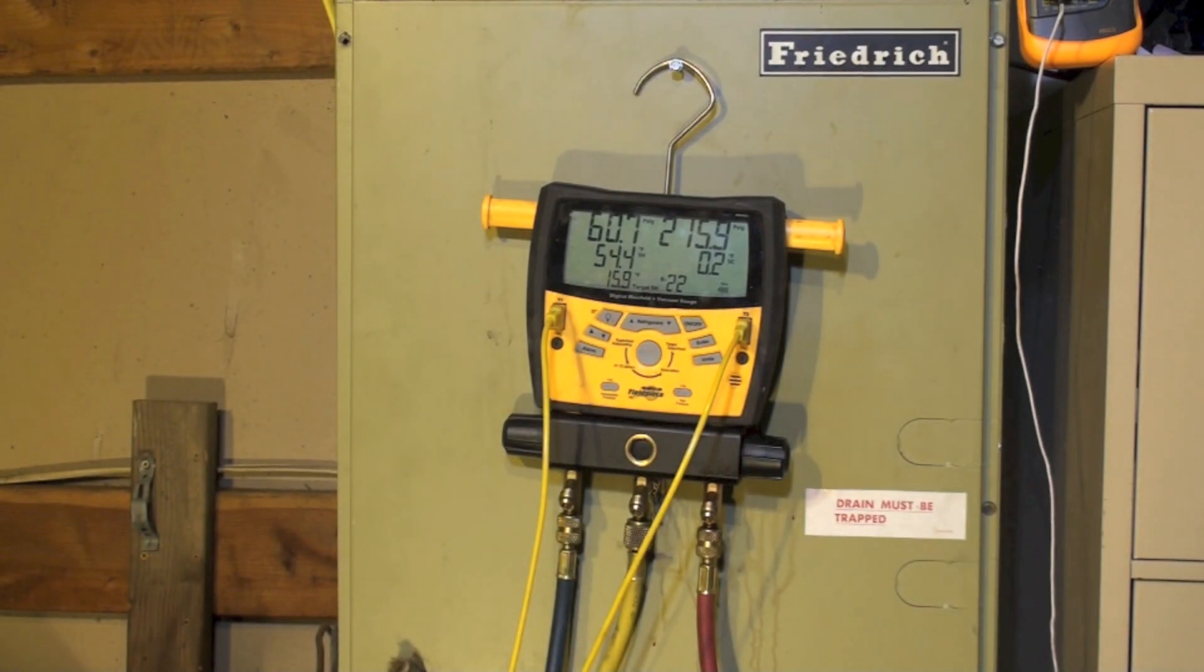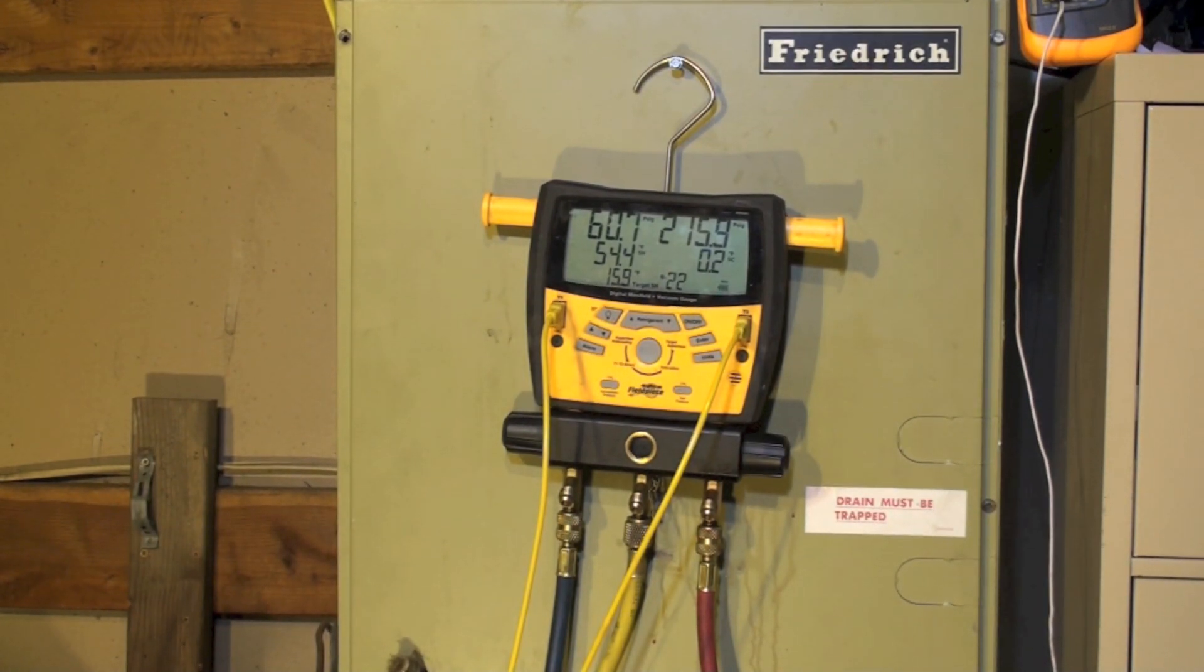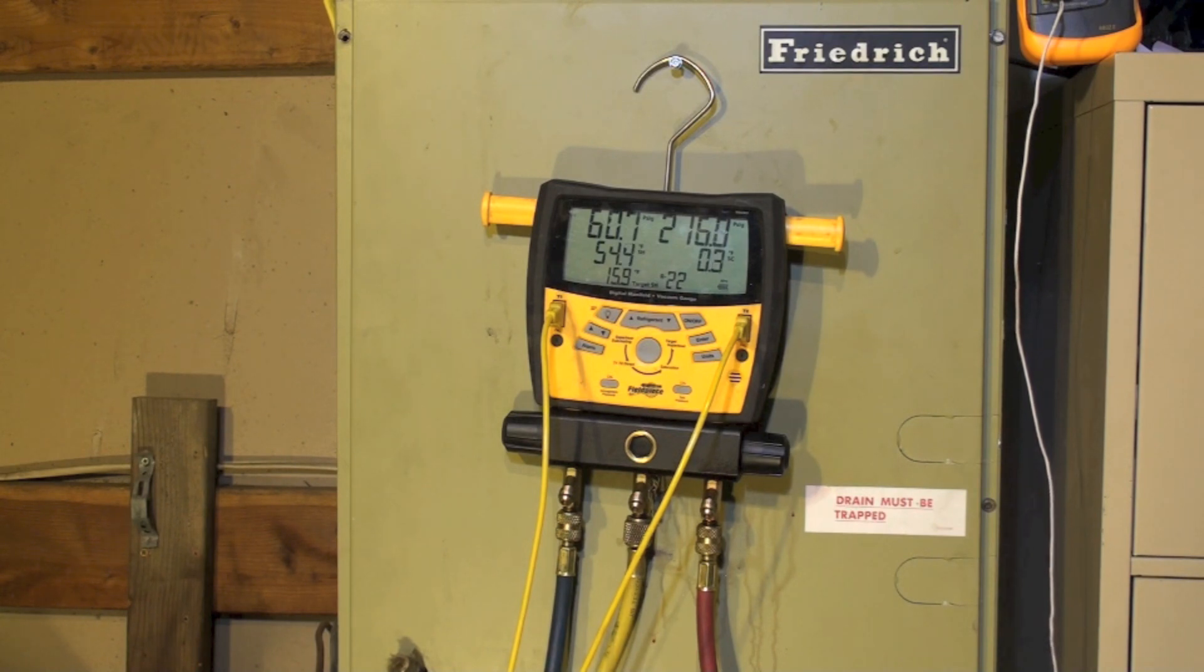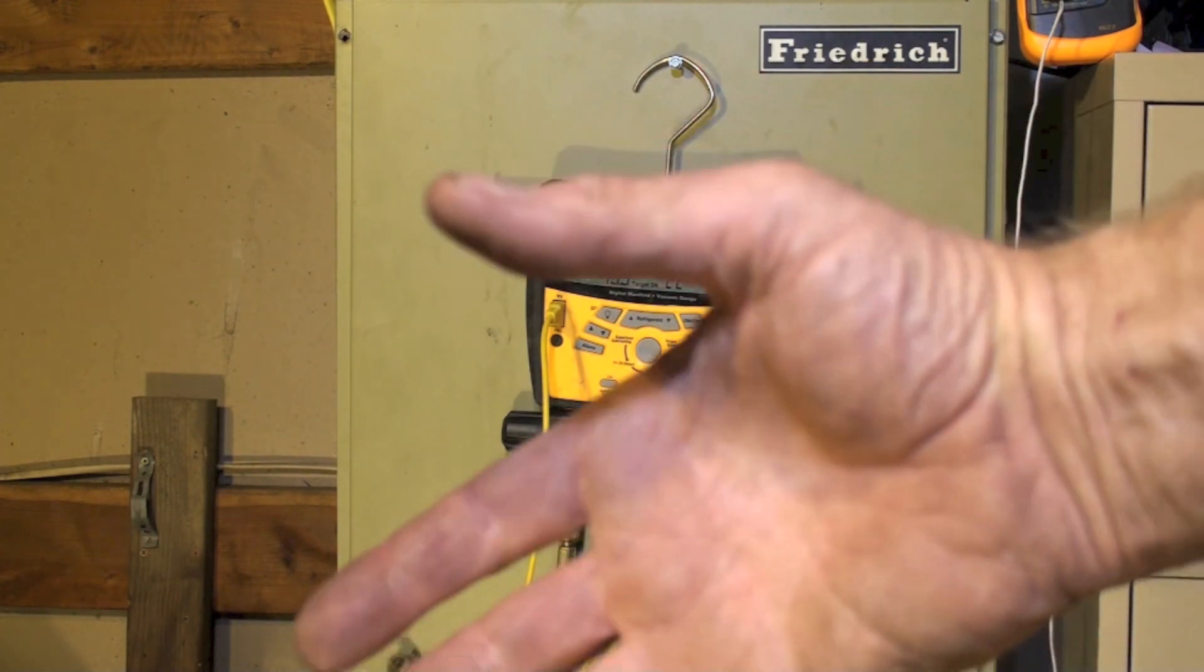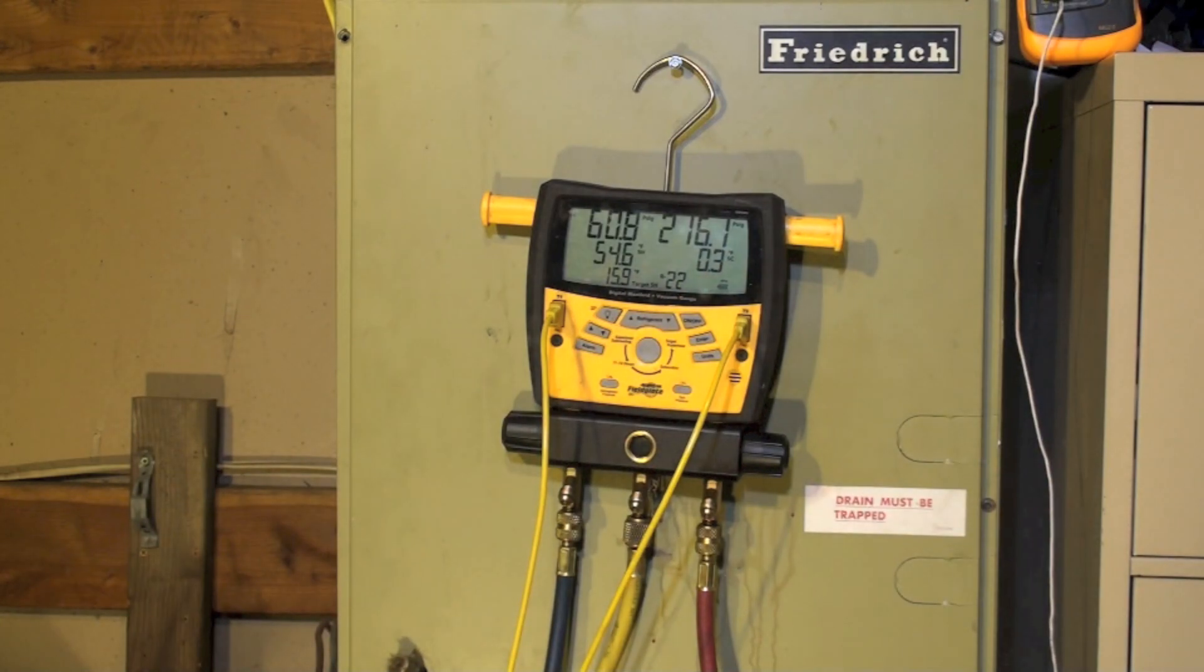Okay, now what I'm going to do: I'm not going to be watching the scale, not going to be watching the gauge set, not even the temperature probe across the coil. I'm only going to be using this thing. Let's see how close I come to the correct charge. We're running about 450 CFM per ton on the air conditioner, so there's plenty of air. Let's see how I do.